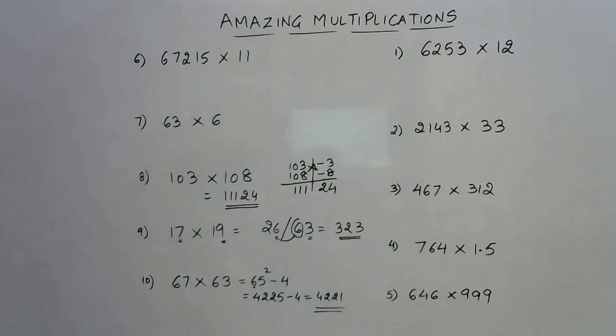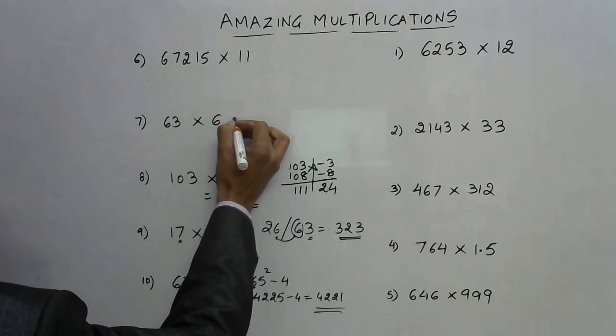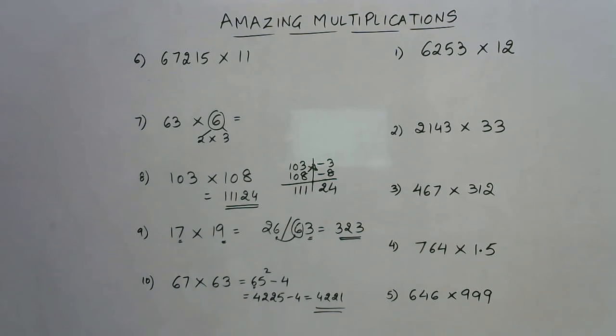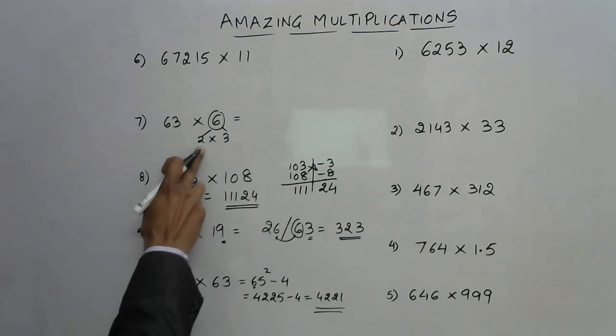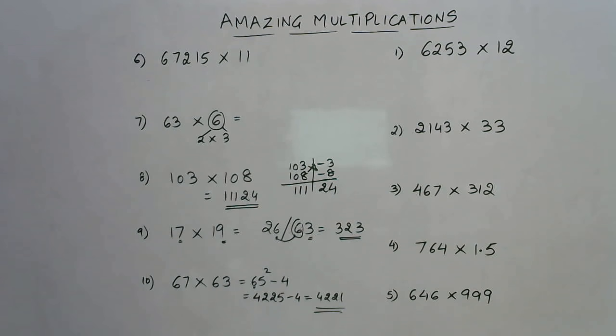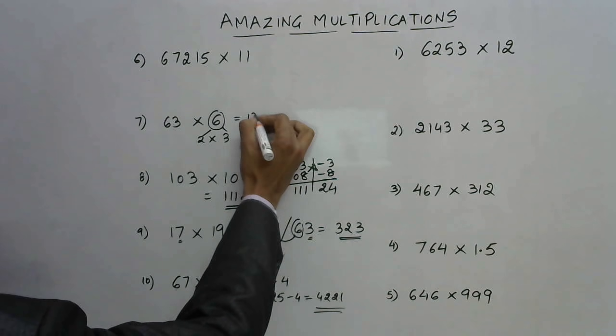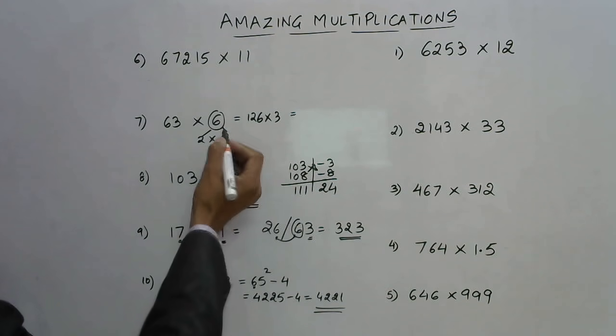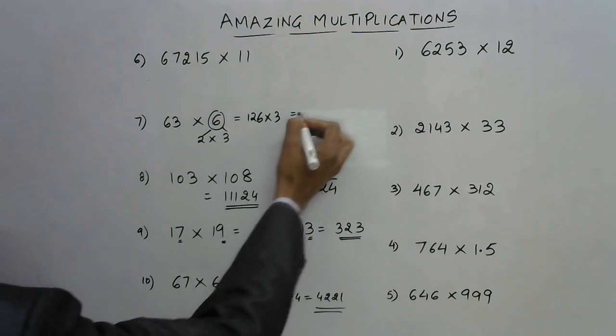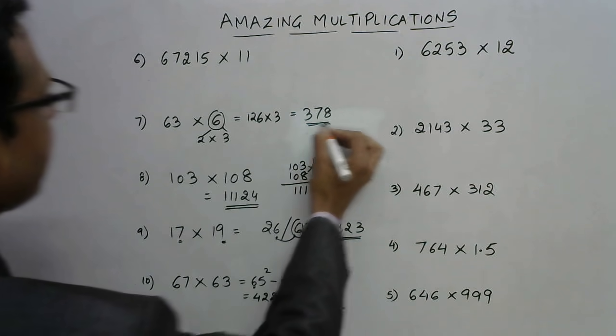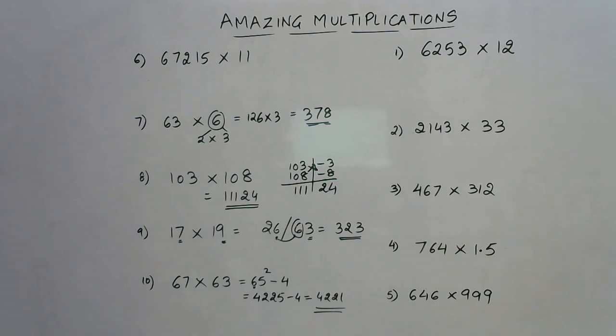The fourth one. We have to multiply this number 63 by 6. How do you multiply by 6? Consider 6 as 2 and 3, since 2 into 3 is 6. Into 2 means double, and into 3 means triple. So all you need to do is double 63 to get 126, and then multiply it by 3. The triple of 100 is 300, triple of 26 is 78. So 378 is the product of 63 and 6. That is the fourth trick.